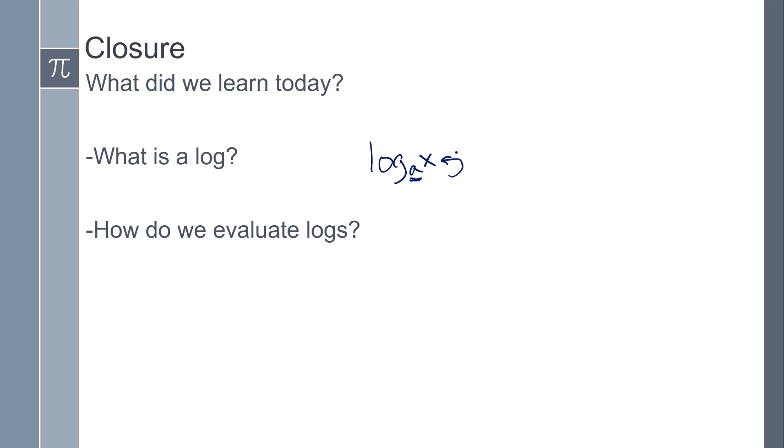And a strategy for us to evaluate logs is to try and make these numbers the same. So I could rewrite 16 as 4 squared. Those end up canceling out, and I'm left with 2. This does conclude our lesson. If you have any other questions, please leave them in the comments.